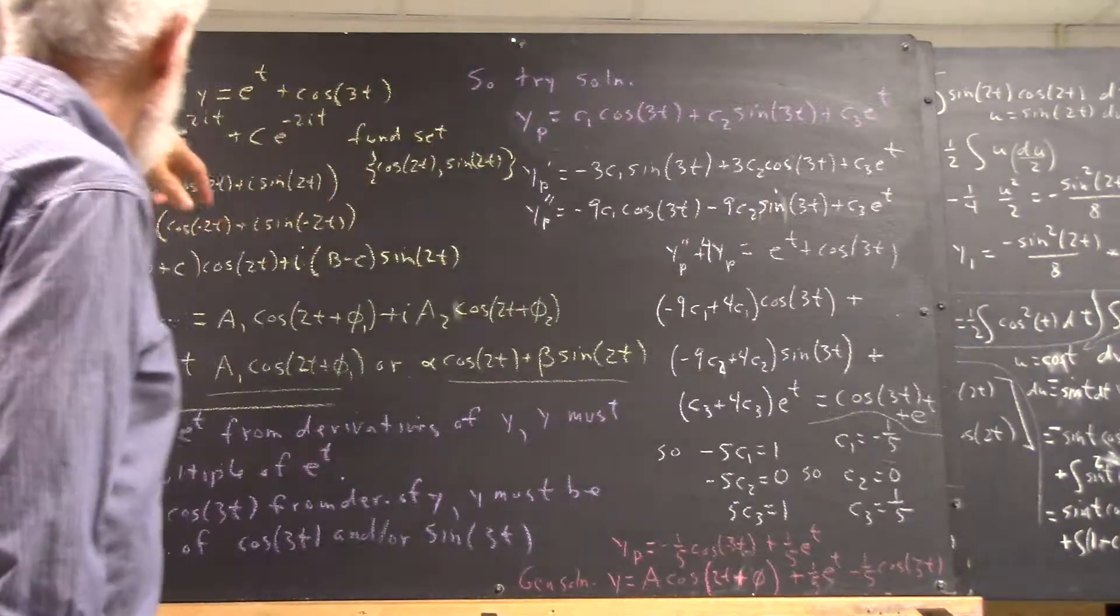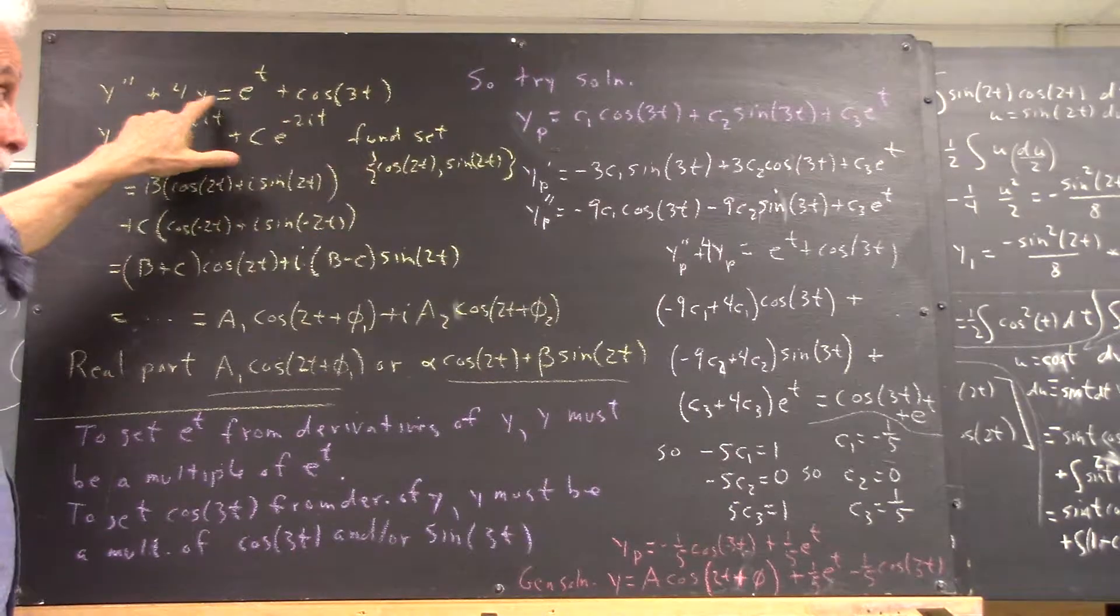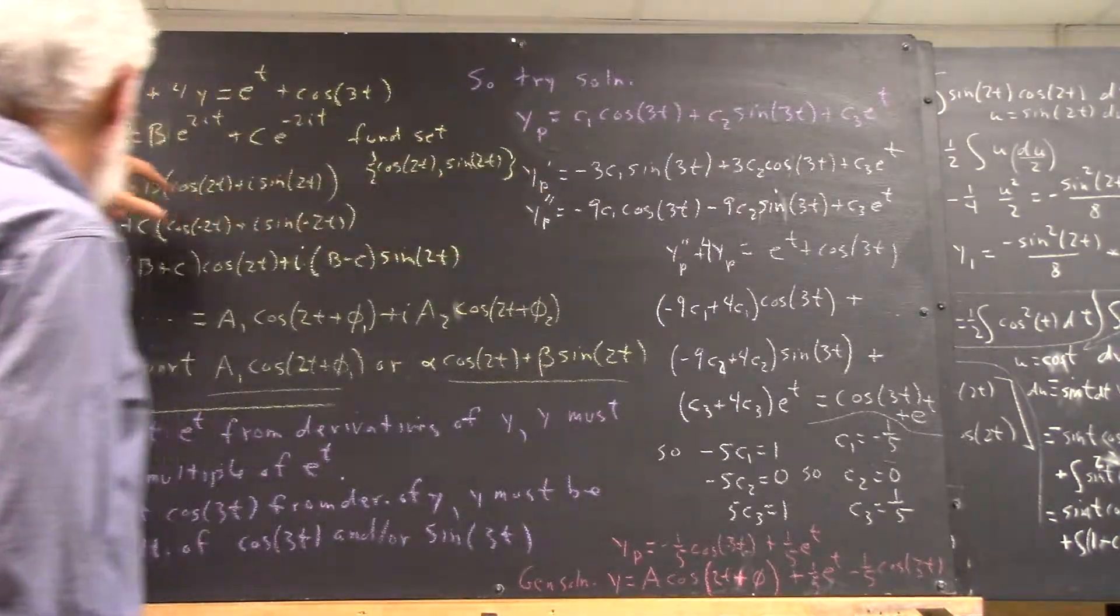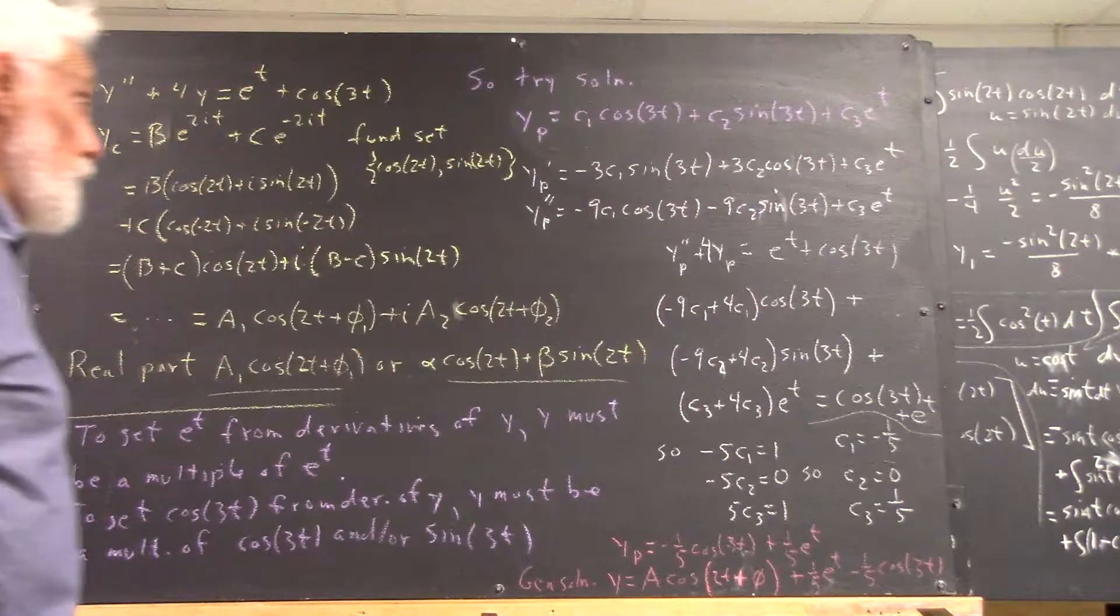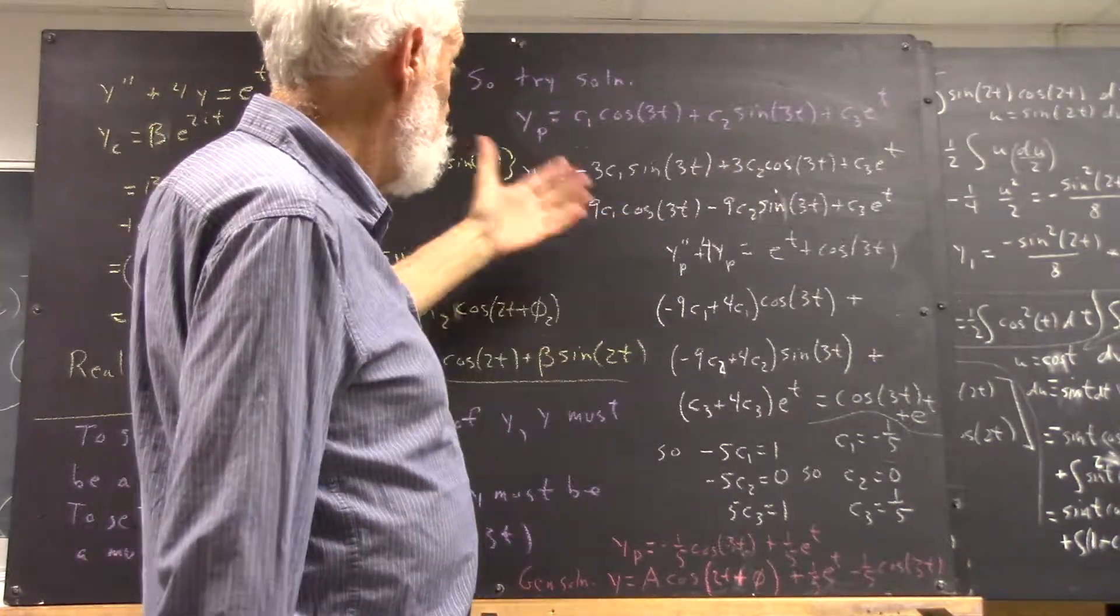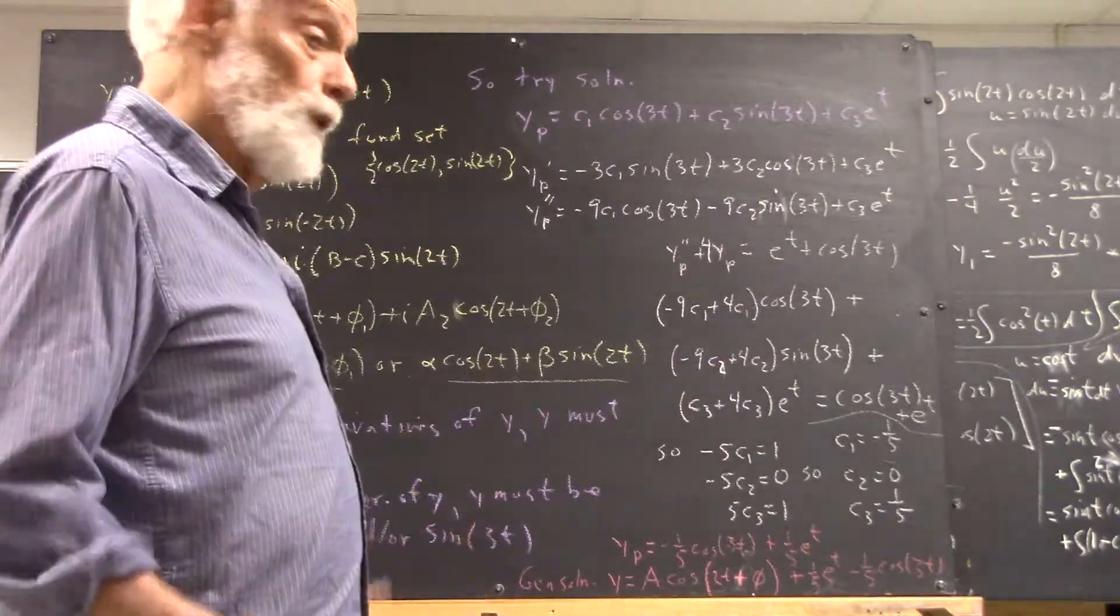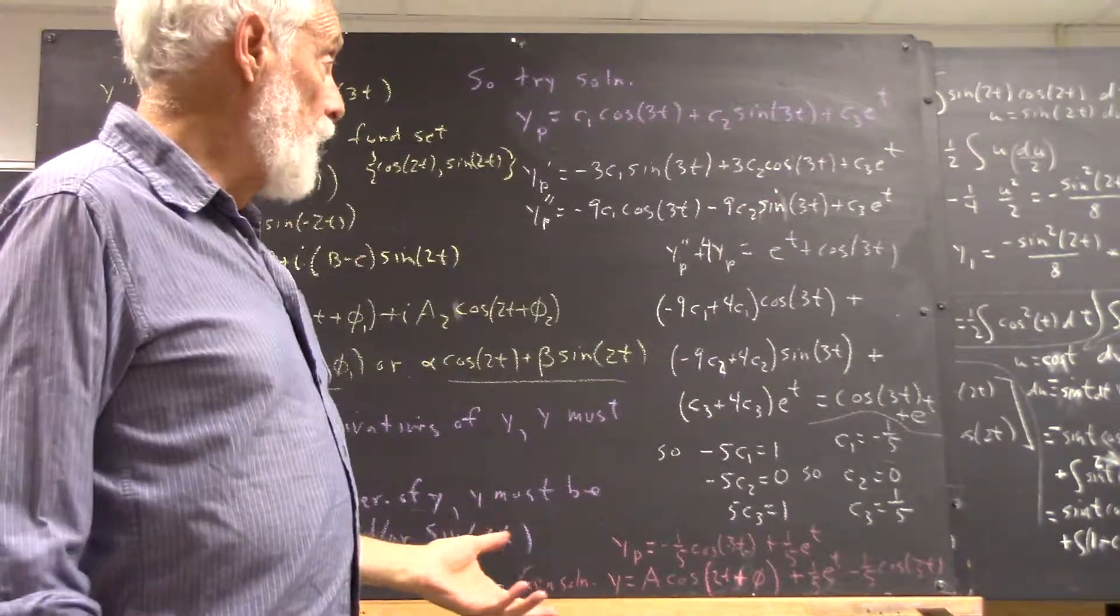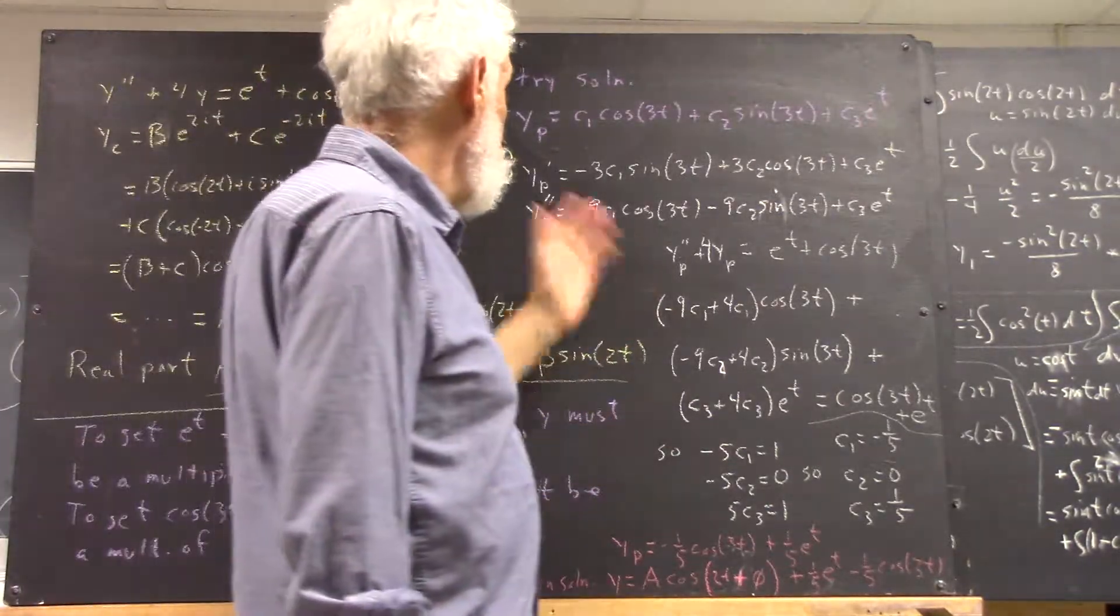We simply want to put this particular solution into the equation, which means we've got the y for our yp. We need to get our y double prime. We take two derivatives. Now I'm not going to do that; you can take two derivatives of this, and if you don't get what I got, fix it, because I'm pretty sure this is right.